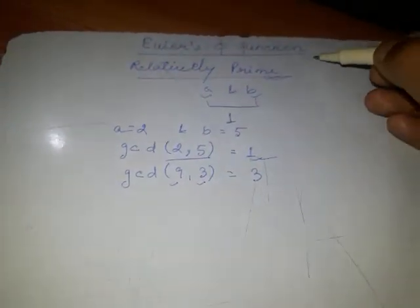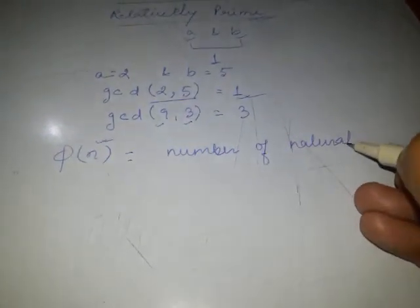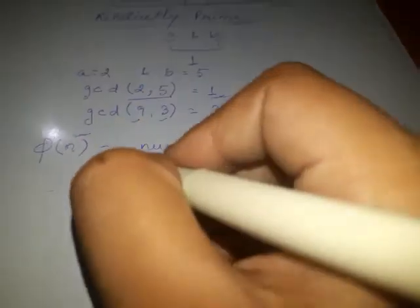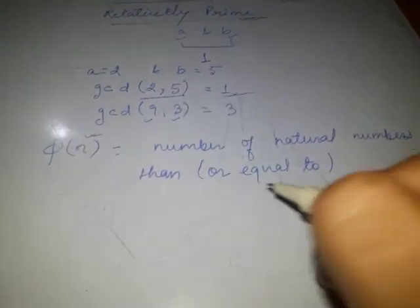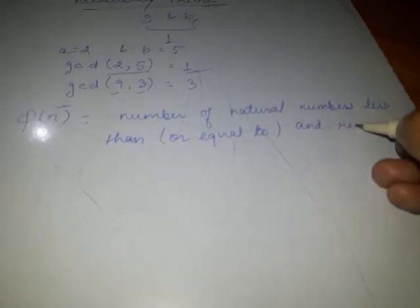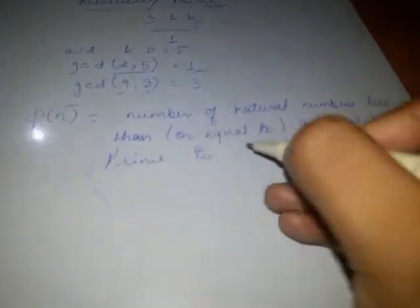Now comes what is Euler's phi function. Euler's phi function is denoted by phi n, where n is the natural number. Phi n is defined as the number of natural numbers less than or equal to n (equal to only in the case of 1) and relatively prime to n.